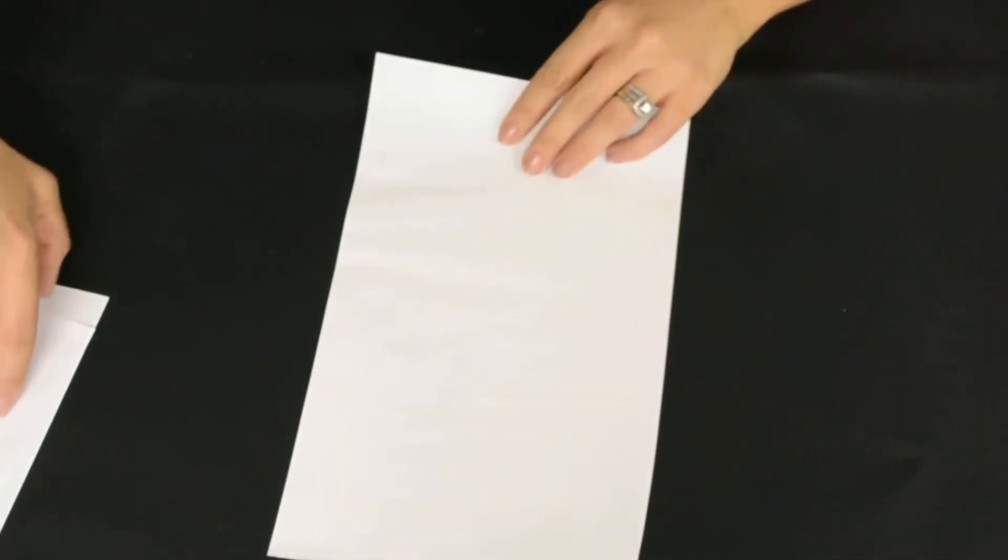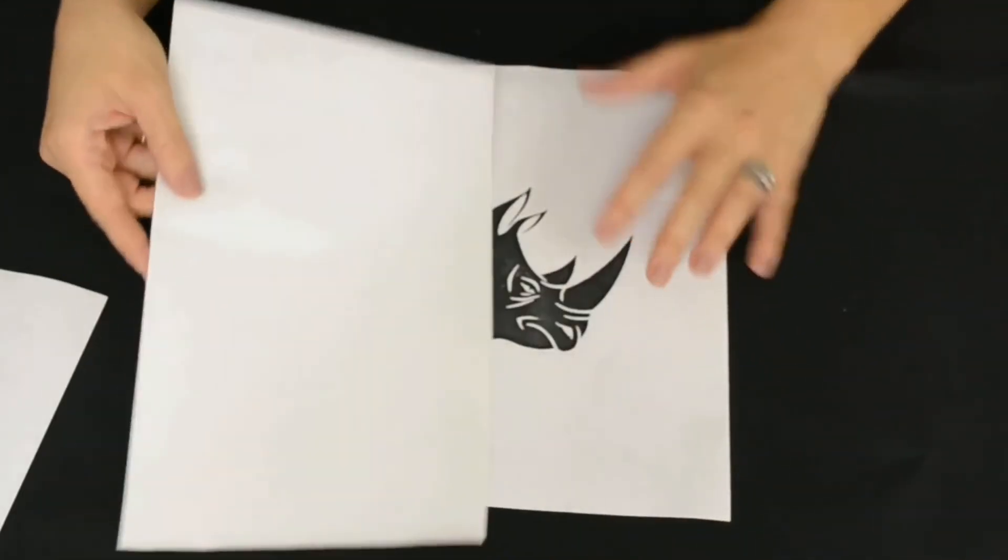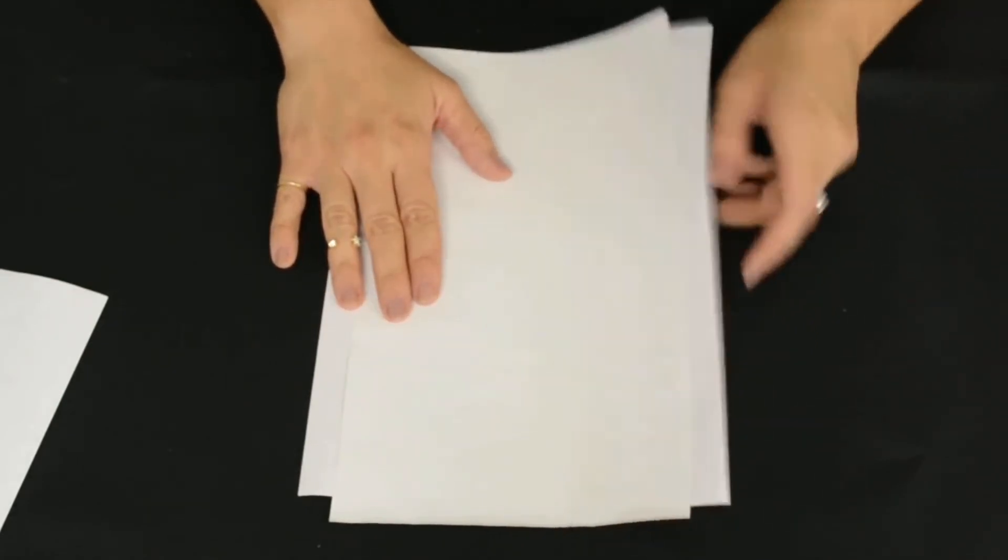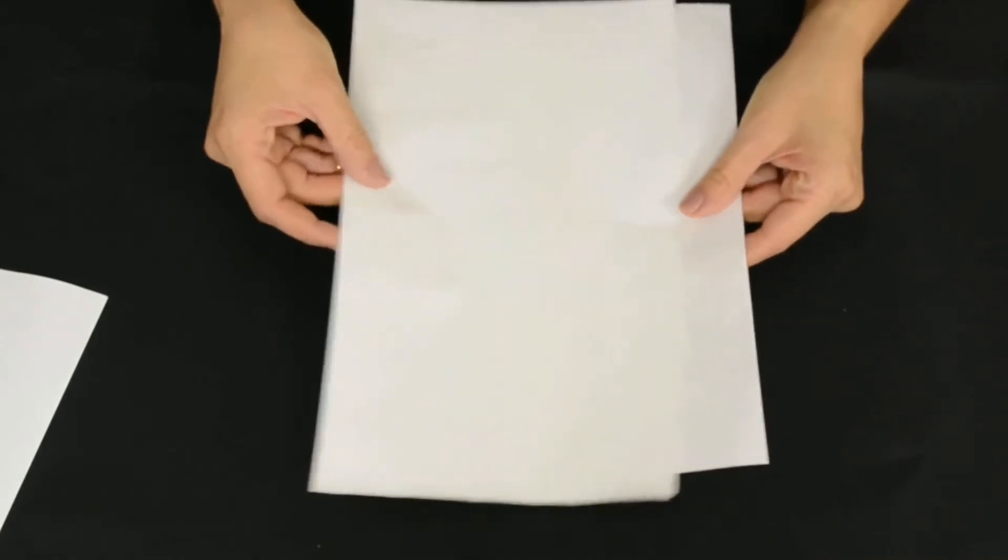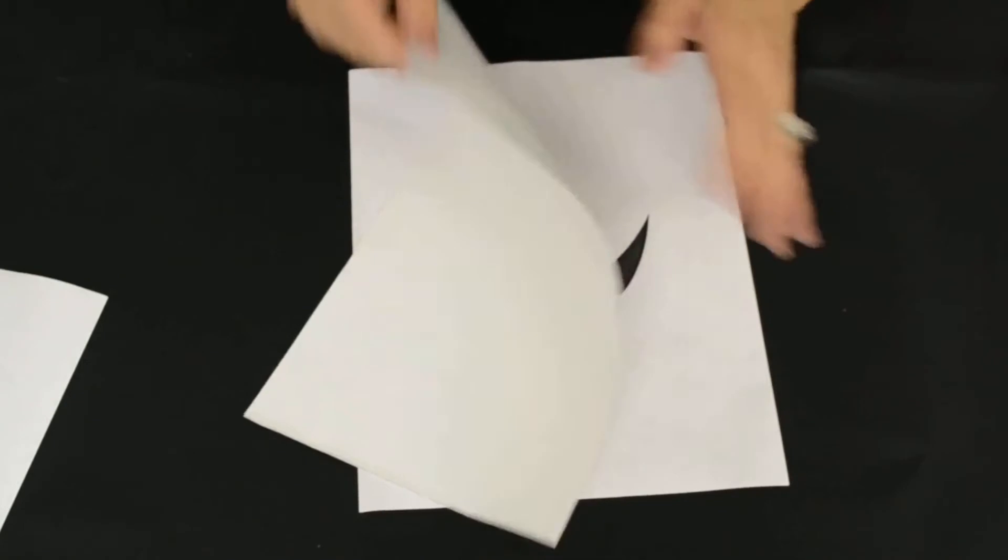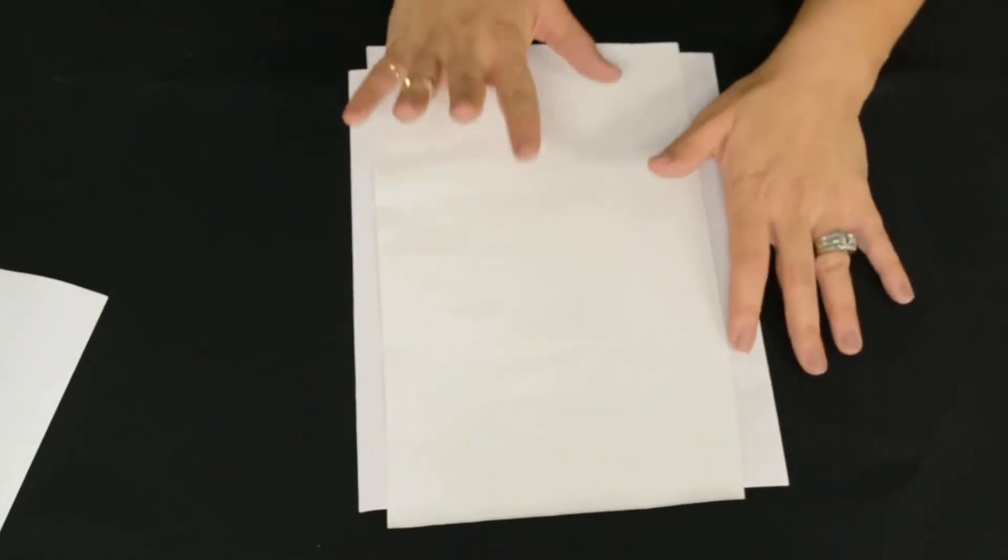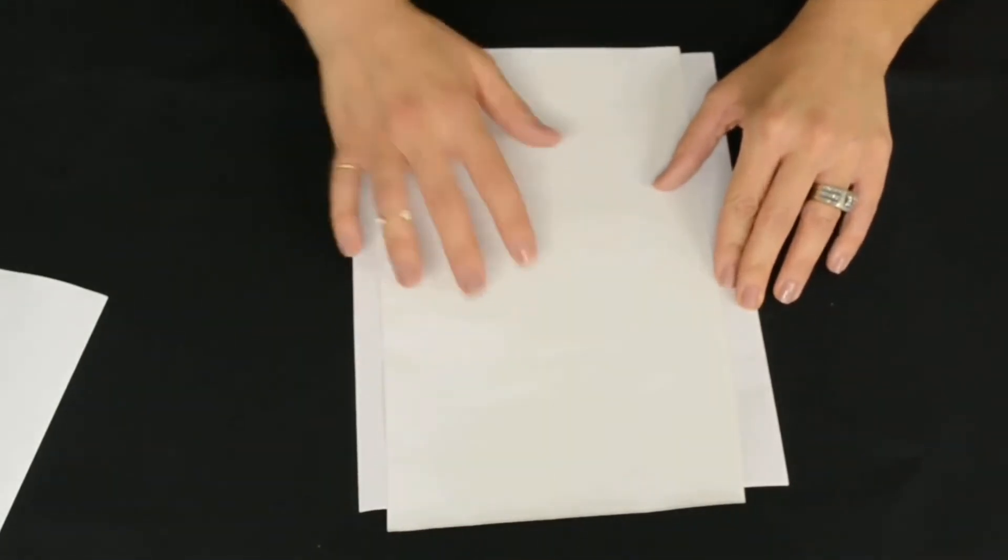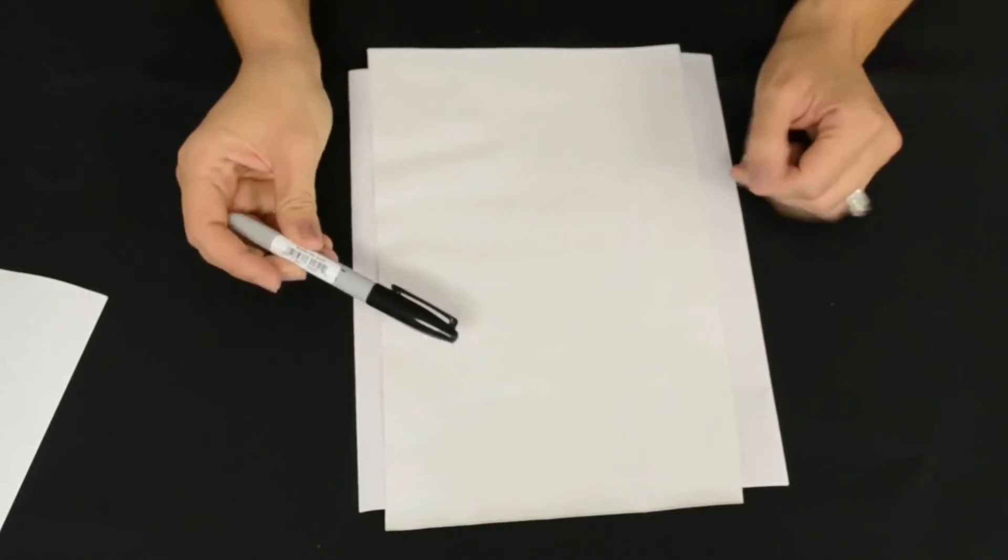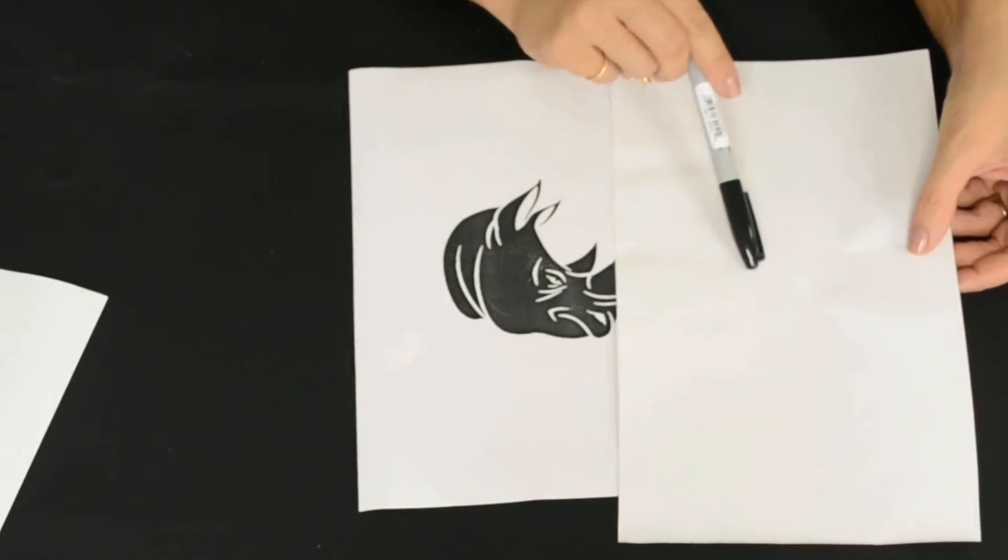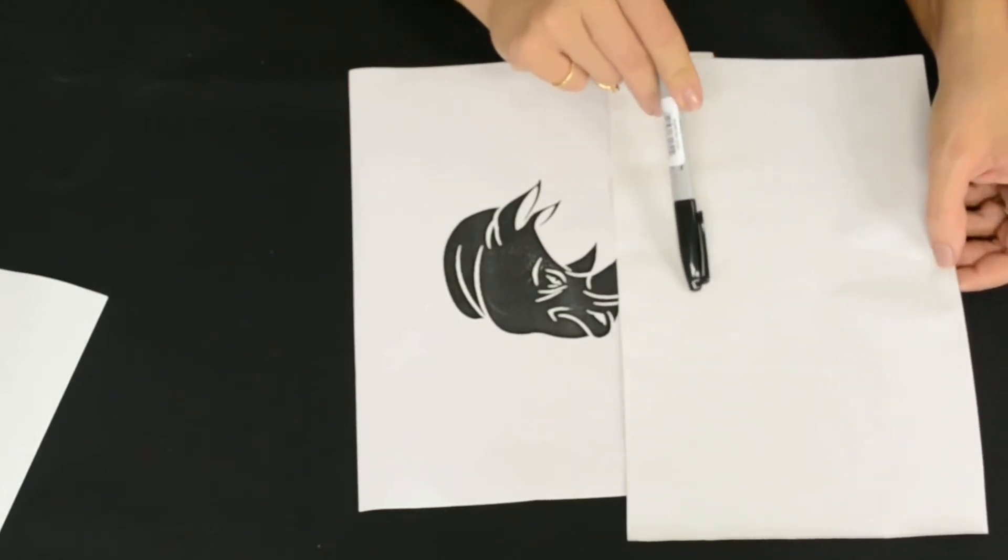The first step, once you choose your design, is to trace it onto the contact paper. This contact paper I purchased at Lowe's - it's basically shelf paper, sticky shelf paper. It comes on a roll and you peel the backing away. If you put this up, you can't really see the design through it. I have a light tracer with a light box that I'm going to use, but you could just put this up to a window. I'm going to use my Sharpie and outline everything, transfer everything to this contact paper.